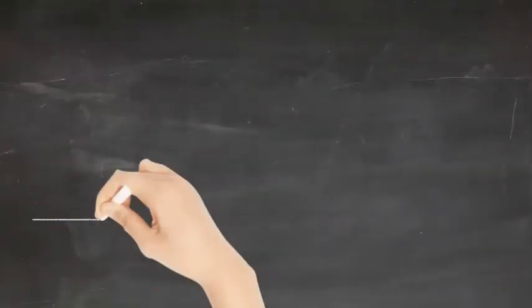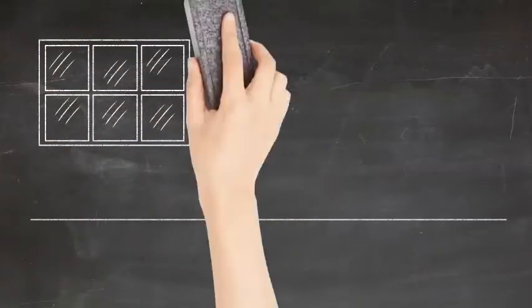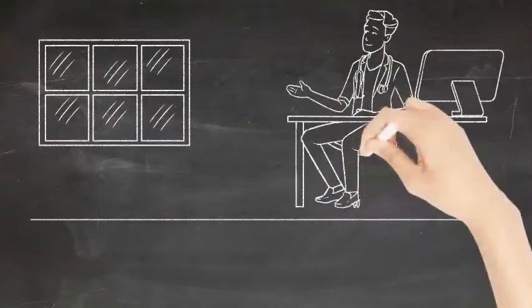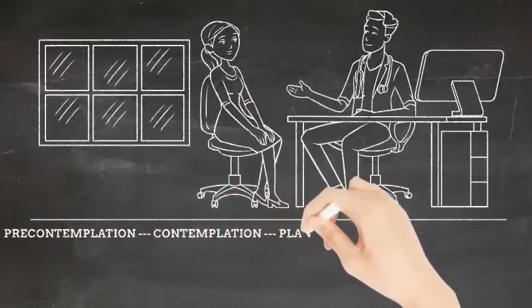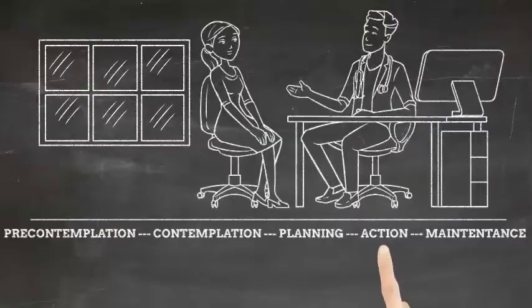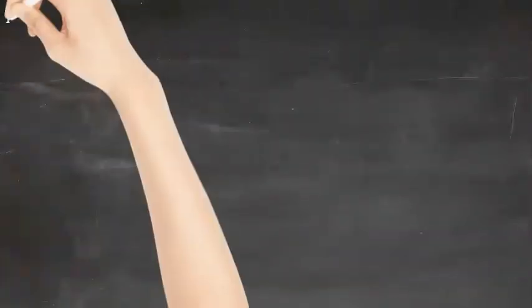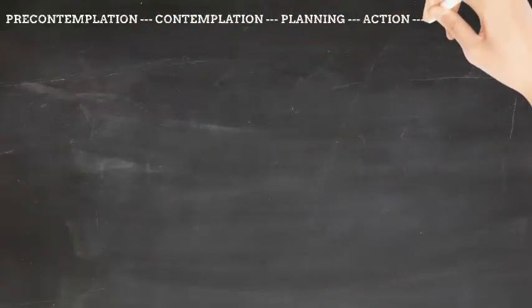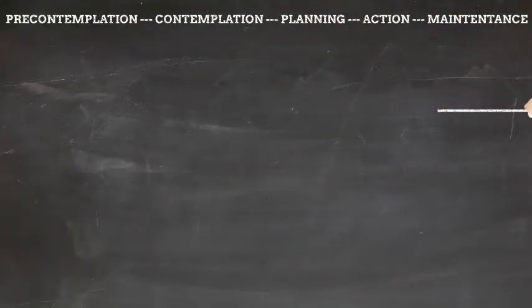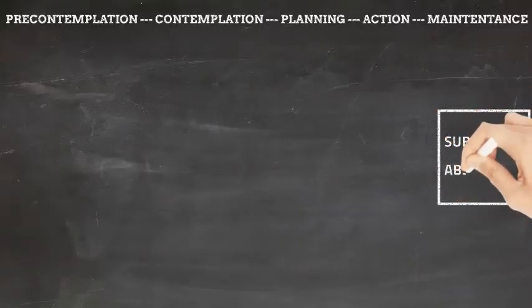When integrating theory into practice, Pender recommends that nurses engage with their patients to decipher the patient's readiness to participate in health-promoting behavior. This scale ranges from pre-contemplative to maintenance. While substance abstinence is the ultimate objective when helping patients with opioid use disorder, it is important to remember that there are many steps between pre-contemplation and maintenance stages of readiness.